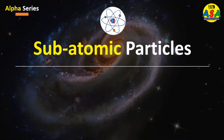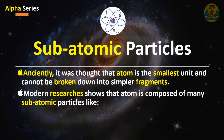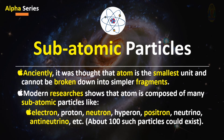Subatomic particles: Anciently, it was thought that the atom is the smallest unit and cannot be broken down into simpler fragments. But now, modern research shows that the atom is composed of many subatomic particles like electron, proton, neutron, hyperon, positron, neutrino, anti-neutrino, etc. It is thought that hundreds of such particles could exist in an atom.